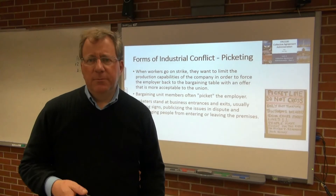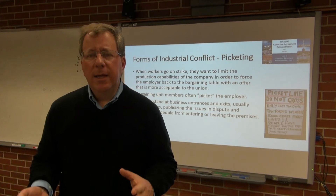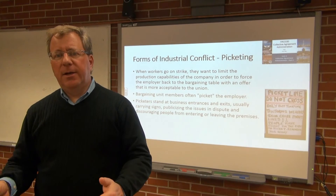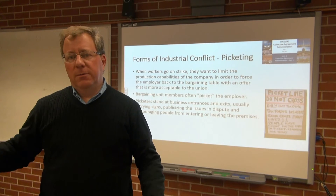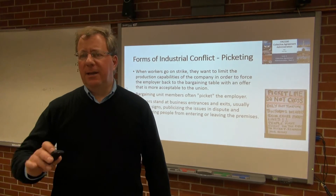In addition to strikes, we also have another form called a picket line. A picket line is used during strikes, but it can be used before a strike as well. When workers go on strike, they want to limit the production capabilities of the company to force the employer back to the bargaining table with a more acceptable offer. Bargaining unit members picket the employer — picketers stand at the business entrances and exits, usually carrying signs, publicizing the issue in dispute and discouraging people from entering and leaving the premises. It's a very political tool that makes the strike visible.